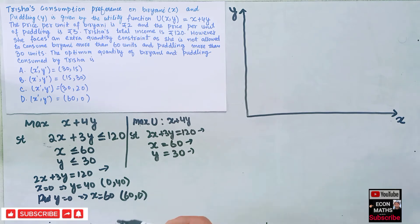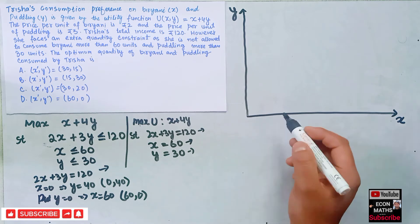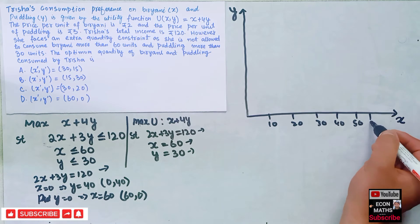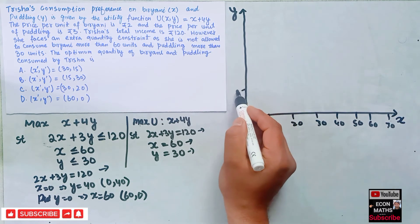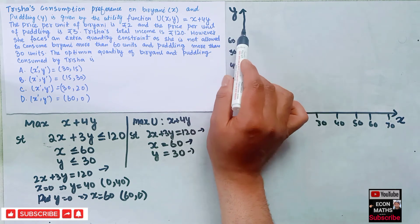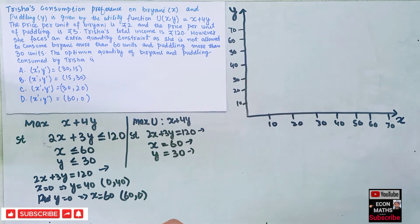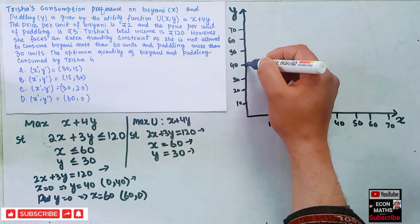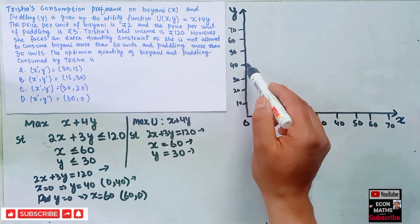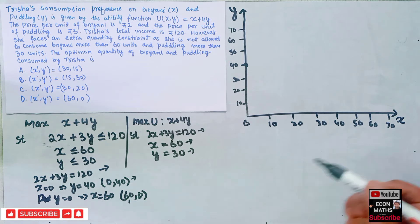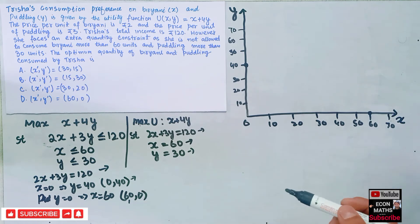On the graph with axes marked at 10, 20, 30, 40, 50, 60, 70, we draw the first constraint 2x + 3y = 120. The first point is (0, 40) — that is, 40 on the y-axis and 0 on the x-axis. The second point is (60, 0) — that is, 60 on the x-axis. We draw a line connecting these two points to represent our first constraint.